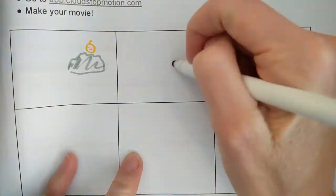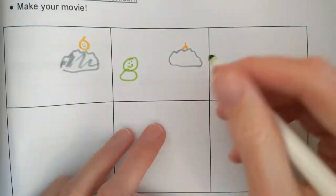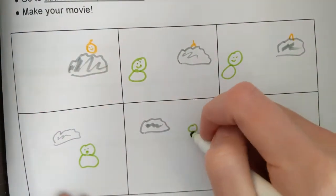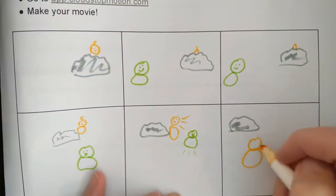I'll show you my storyboard. I'm going to tell a story about a frog and a duck playing hide and seek. The frog will look for the duck and can't find her, and then the duck will pop out and surprise the frog.